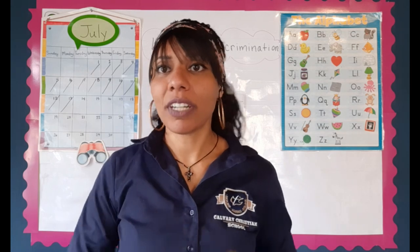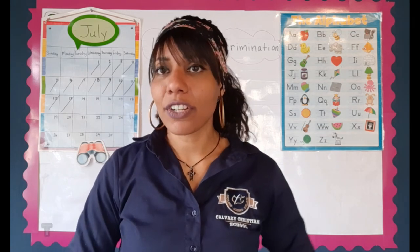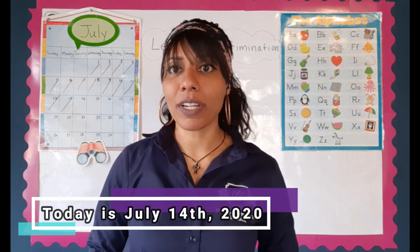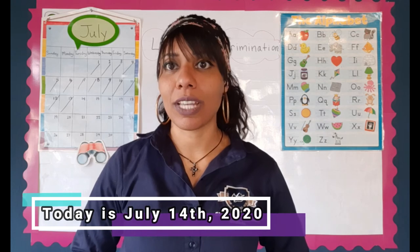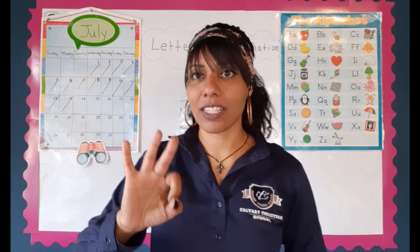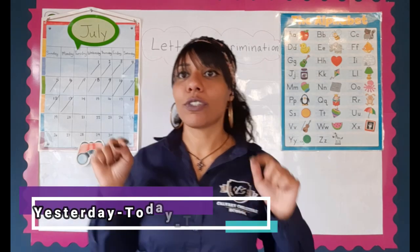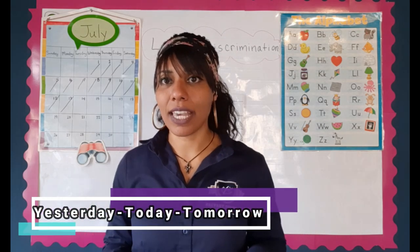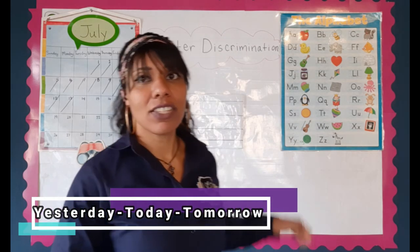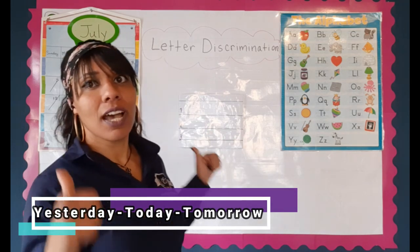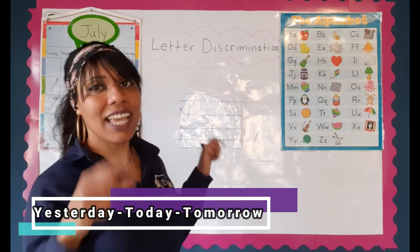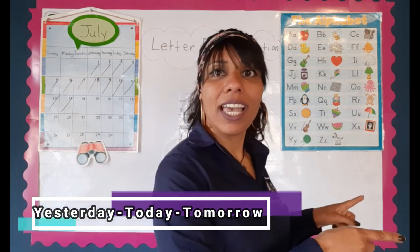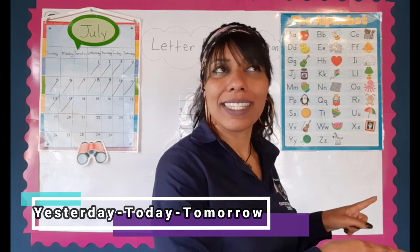So if we put all of that together, today is Tuesday, July 14, 2020. And so if today is Tuesday, yesterday was Monday and tomorrow will be Wednesday.